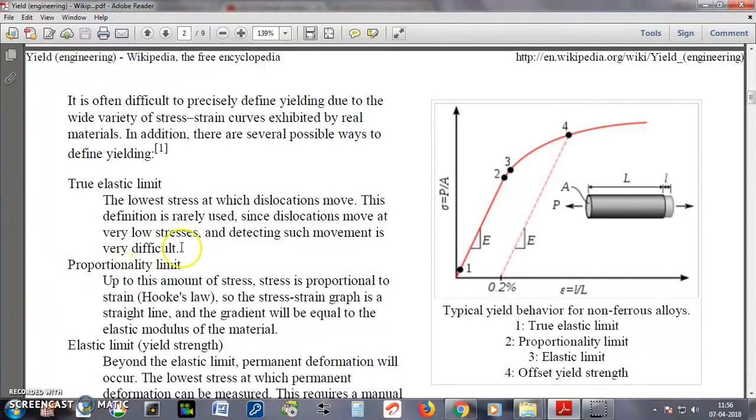Point number 2 is the proportionality limit. Up to this point number 2, the stress is proportional to strain. So it is a straight line and this is an elastic region where the deformation actually we can get back to the original length of the specimen while releasing the load. That is elastic deformation.